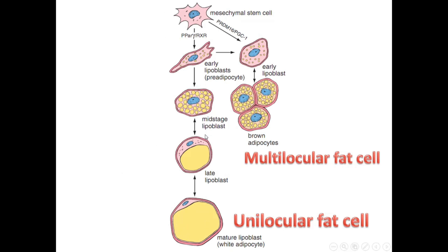The first type stores all of its lipids inside one vesicle, one cavity, or a single huge droplet. The other cell type stores lipids in multiple droplets. The first cell is called white adipose or unilocular fat cell, and the second cell is called brown adipose or multilocular fat cell.